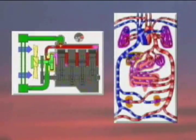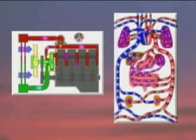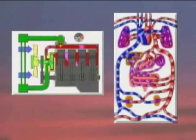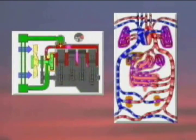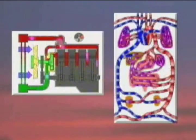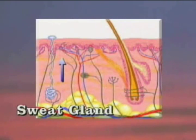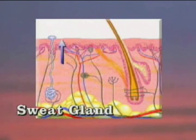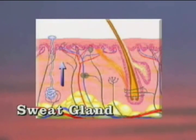Your blood absorbs this heat, as does the water in your car's engine, and is pumped to the tissues of the skin and lungs. This stimulates the sweat glands to release moisture at the skin surface where it evaporates. This process draws heat from the blood, which of course cools it.